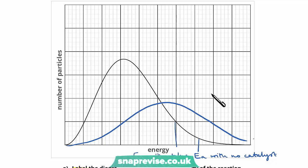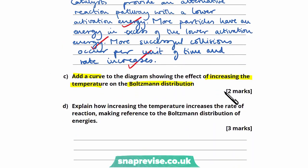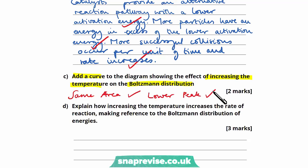If we label our curve and look at the question, we can see it holds two marks. The first mark comes from having a curve with roughly the same area, and the second for a lower peak shifted to the right, just as shown in the graph.